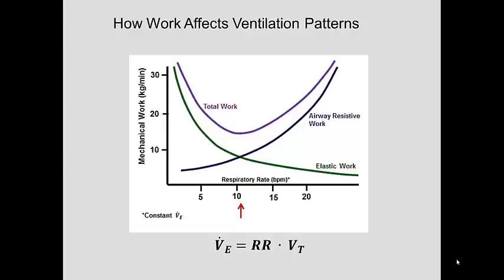The total work is the algebraic sum of the work to overcome the elastic forces and the airway resistance. Right at some intermediate respiratory rate, indicated by the red arrow, the work to overcome the sum of the forces is at a minimum.